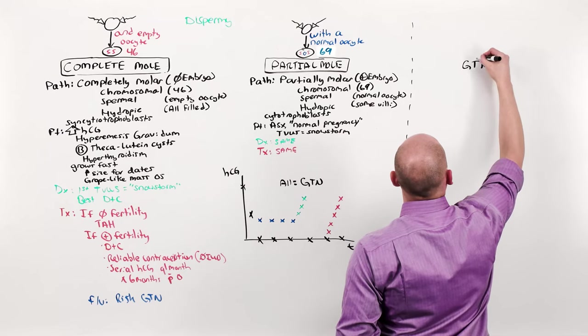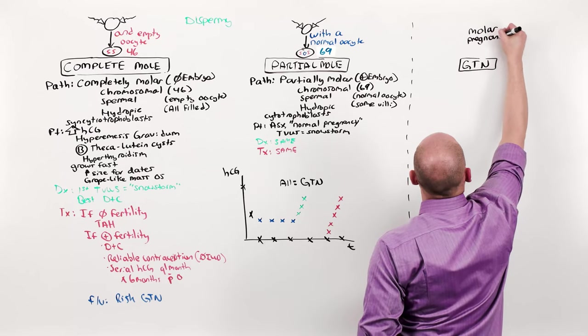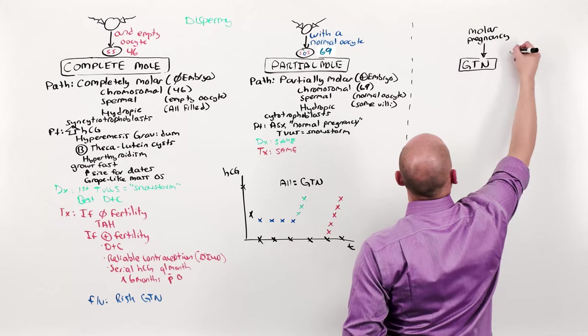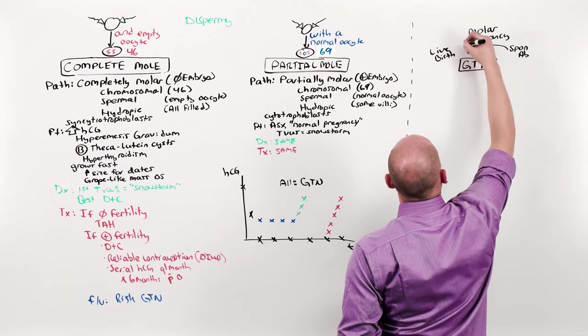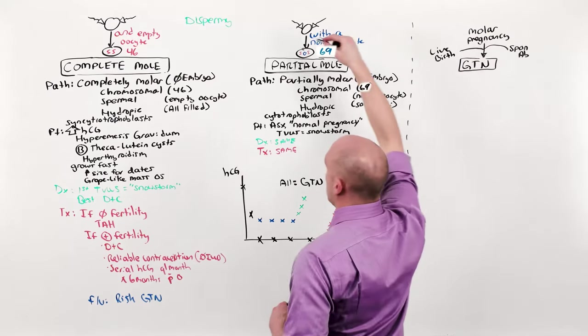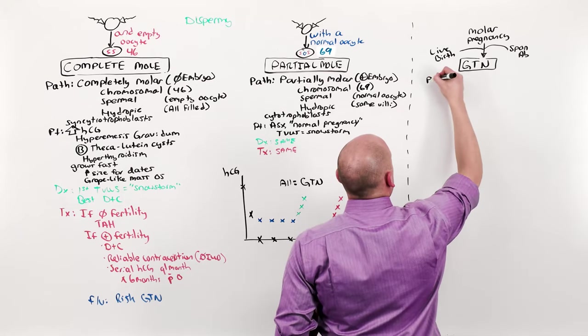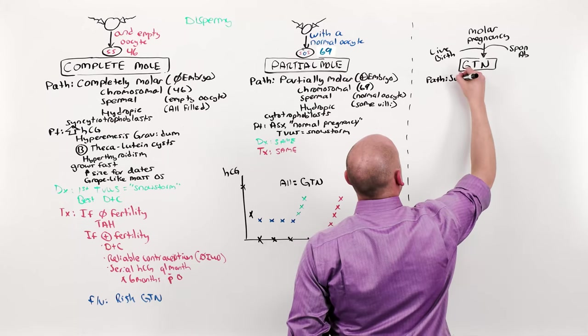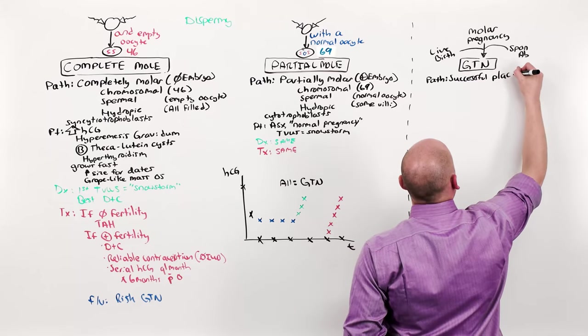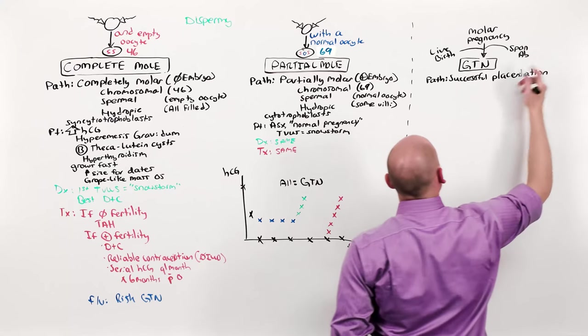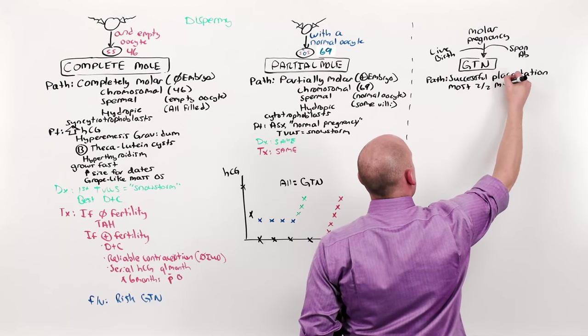Gestational trophoblastic neoplasms can arise from a molar pregnancy. In fact, most of them do. But they can also arise from a spontaneous abortion. They can even arise from a live birth. The reason for that is the molar pregnancies are the result of a dispermy fertilization event. Gestational trophoblastic neoplasms can arise any time there is successful implantation of the placenta. Successful placentation. Though most arise are secondary to molar pregnancies.